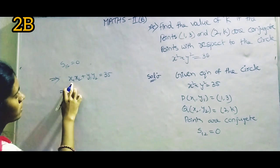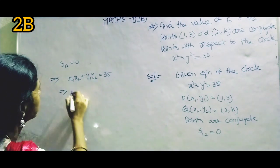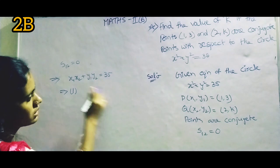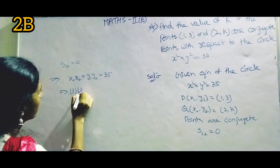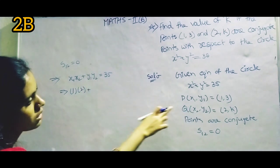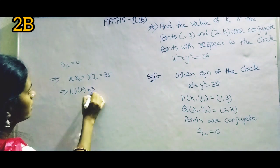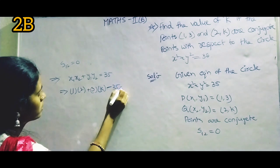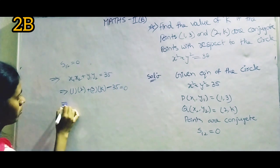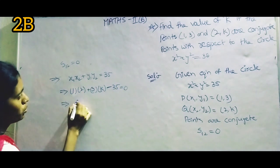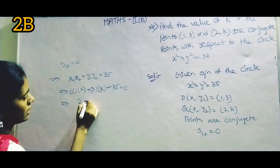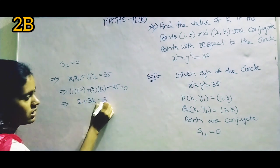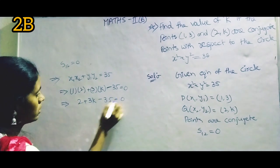Here x₁ = 1, x₂ = 2, y₁ = 3, y₂ = k. So (1)(2) + (3)(k) - 35 = 0. That implies 2 + 3k - 35 = 0.